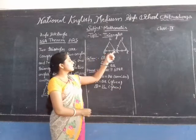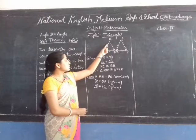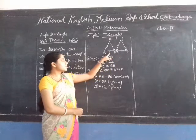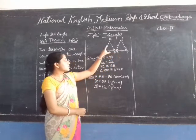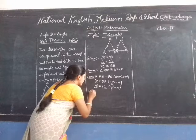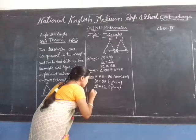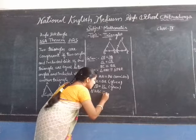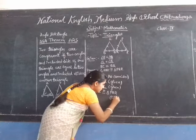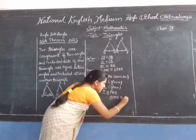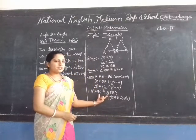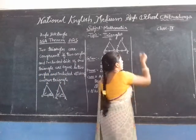From the Side Angle Side rule: this side equals this side, this angle equals this angle, and this side equals this side. On the basis of SAS congruent rule, these two triangles are congruent to one another. Therefore, triangle ABC is congruent to triangle PQR by the SAS congruent rule.